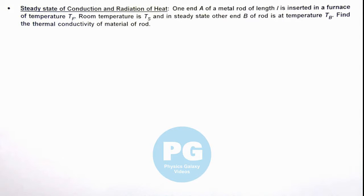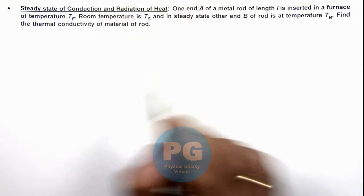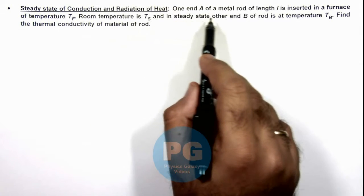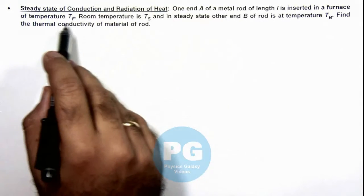In this illustration, we'll discuss the steady state of conduction and radiation of heat. We are given that one end A of a metal rod of length l is inserted in a furnace of temperature T_f.